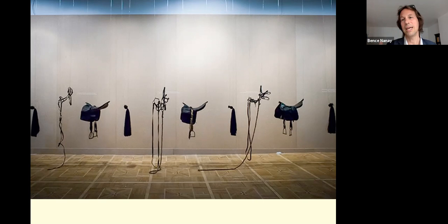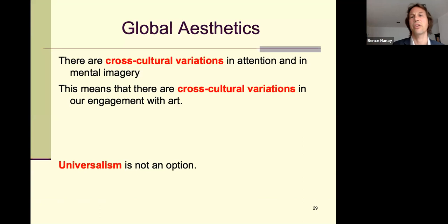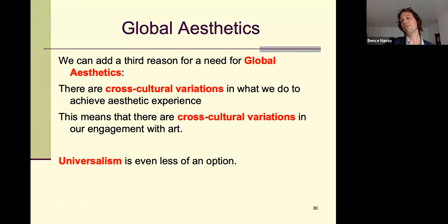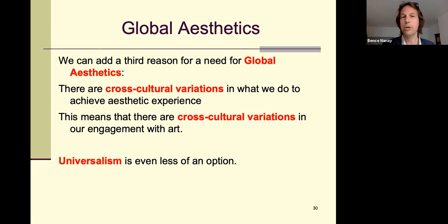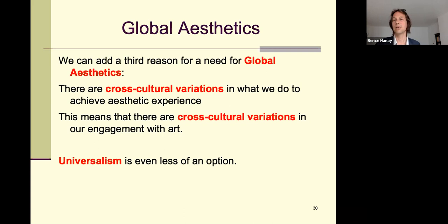That's one way to explain cultural differences in aesthetic experience — mediated by attention and mental imagery. Because of all these cross-cultural variations in attention and mental imagery, there will be cross-cultural variations in aesthetic engagement. Universalism is not an option. And bringing in the achievement framework: there's an additional reason for cross-cultural variations — the cross-cultural variations in *what we do* and how we try to achieve the experience. Aesthetic universalism is even less tenable; global aesthetics is the only way to go. Thank you.